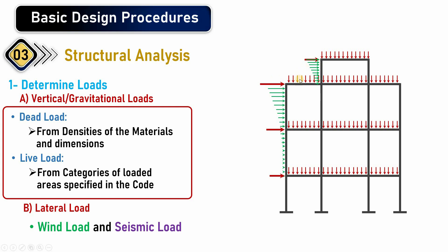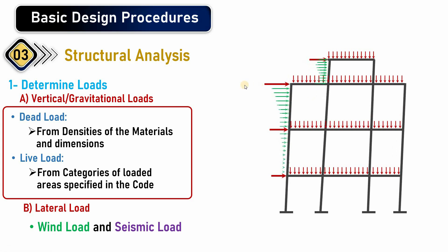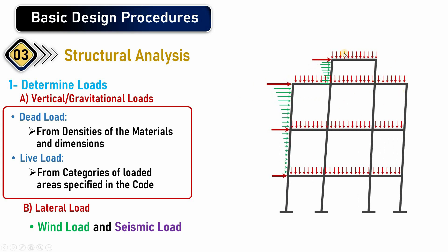Lateral loads generally come from wind loads and seismic loads. In some countries, snow loads may also need to be considered as additional vertical downward loads. The seismic load is the earthquake load, and wind loads are generally horizontal, causing lateral deflection or lateral translation of the structure. The structural engineer must design vertical members — columns and walls — to ensure the overall stability of the structure.